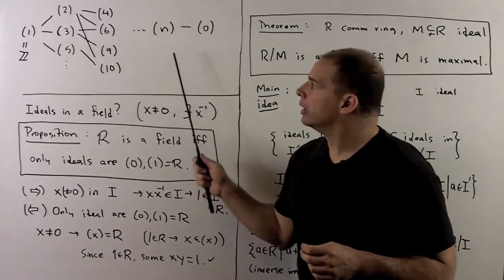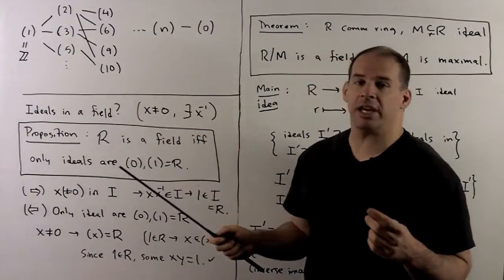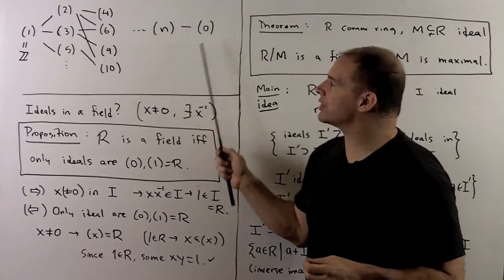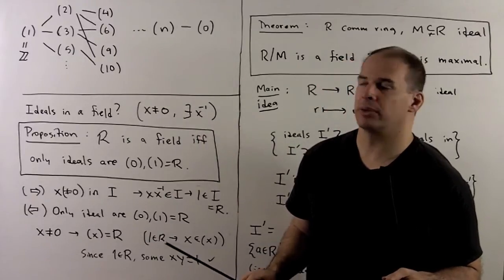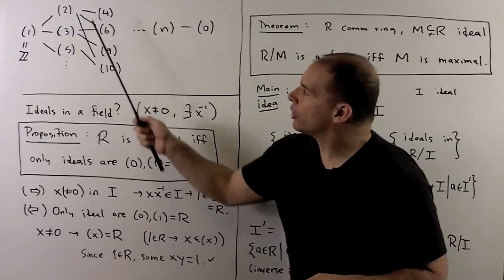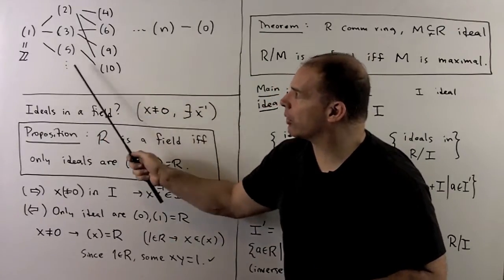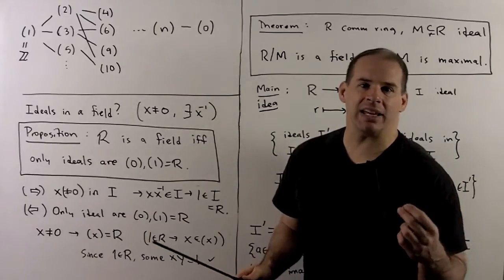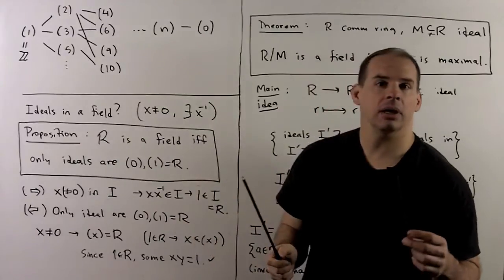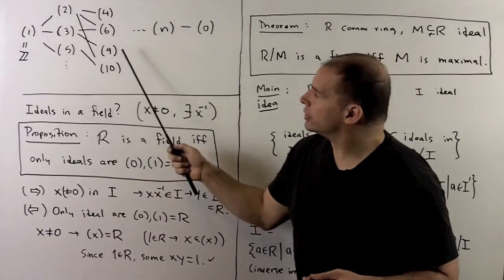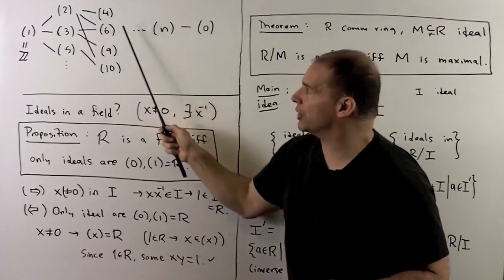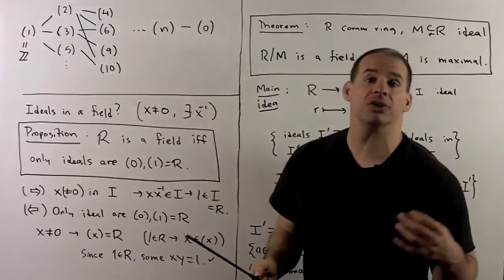For the picture, we partially order the ideals in ℤ using inclusion. The ideals in ℤ are always given as multiples of some fixed integer N. Our largest ideal is ℤ itself — the multiples of 1. For the next layer, we have the multiples of the primes — these are the maximal ideals, so there's nothing between this layer and ℤ itself. Beyond that, we have the composites: for instance, multiples of 4 are always multiples of 2; multiples of 6 are always multiples of 2 and multiples of 3, and so on.